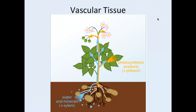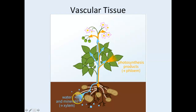Number three: vascular tissue. The word vascular means vessels. In animals we talk about arteries and veins — our blood vessels. In plants, there are different vessels. The first is called xylem — a hollow tube that transports water and minerals from the roots up to the leaves. The arrows go upward. Xylem cells eventually die, so that tube is made of dead cells.